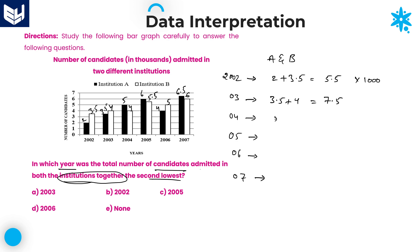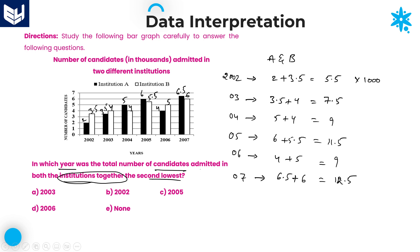Continuing: 2004 is 5 plus 4 equals 9. For 2005: 6 plus 5.5 equals 11.5. For 2006: 4 plus 5 equals 9. And finally for 2007: 6.5 plus 6 equals 12.5. These are the six combined values for both institutes over the years 2002 to 2007.